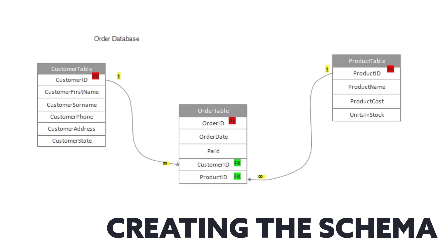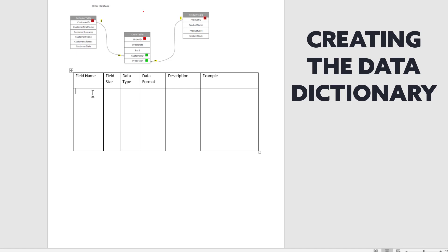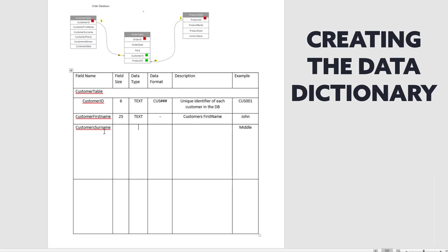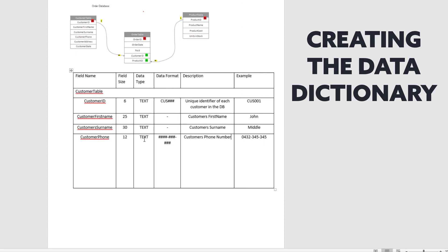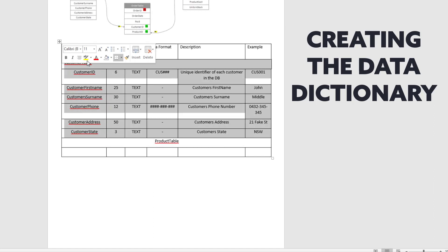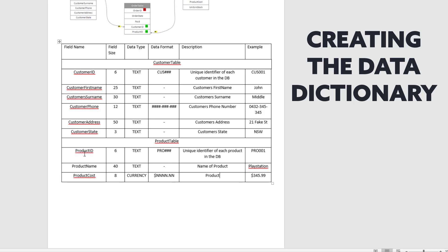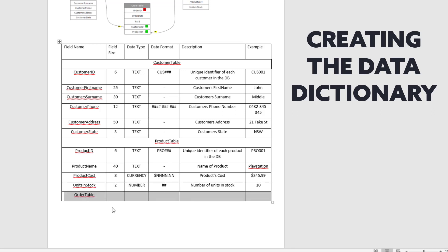To create a schema you need to have the table names, the fields, primary keys, foreign keys, relationships, and relationship types. In this case we are using the one-to-many relationship type, where one customer can buy multiple products in the order table. Once we've created the schema, we then need to move on to create the data dictionary. The data dictionary is basically data about data within your database, so you have to list all your fields — things like customer ID, first name, surname, customer phone number, and customer address.